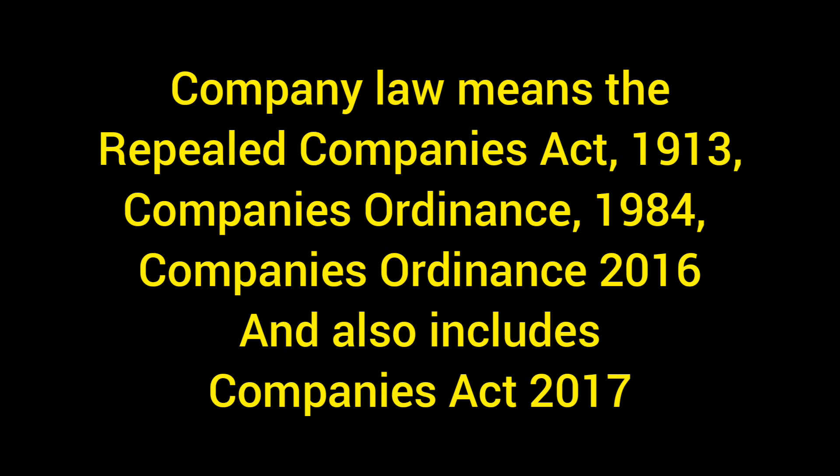To explain this with an example: let's say a company was formed at some point in the 1990s — would it fall within the definition of a company under the Companies Act 2017? The answer is: it depends. If this company was formed and registered under the relevant company law at that time — which would have been the Companies Ordinance 1984 — then by virtue of Section 2 subsections 17 and 18, that company definitely falls under the definition of a company in Pakistan, even though it was not formed under the latest law.